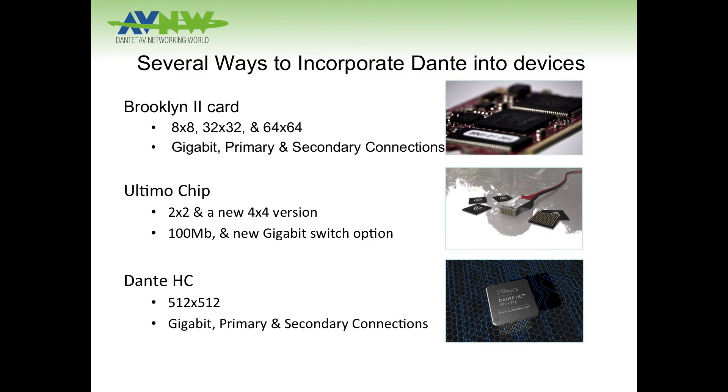The third method of integrating Dante hardware-wise is the new Dante HC chip. HC stands for high capacity — we went off the naming-after-bridges format. It can do up to 512x512 transmit and receive, gigabit, with primary and secondary connections. There are several devices using it now: the Yamaha Rivage PM10 console has an option card that uses it, configured for 128x128. Clear-One has a converged matrix with a transmit and receive count of 256x256. This should also appeal to those involved in broadcast systems — it really opens up new opportunities.